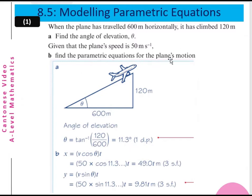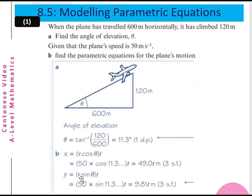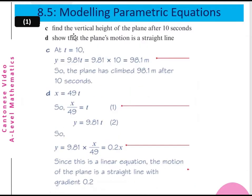Part b: Find the parametric equation for the pen's motion. If the velocity at takeoff is 50 meters per second, then x equals 50·cos(11.3°)·t, which gives approximately 49t. And y equals v·sin(θ)·t = 50·sin(11.3°)·t, which gives y ≈ 9.81t.